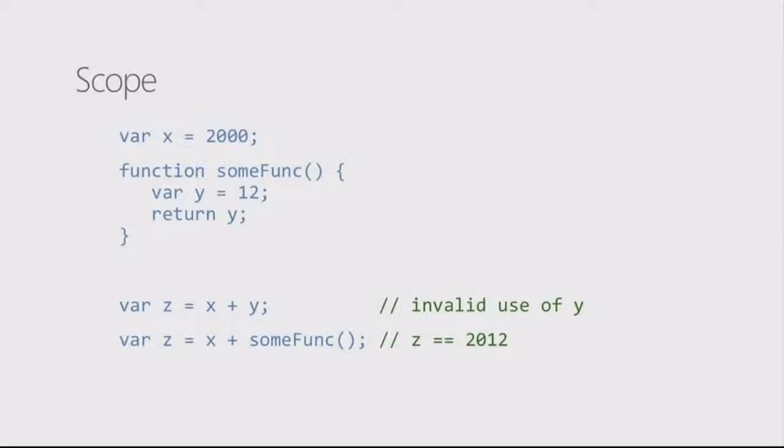However, because we returned y in the function, that's why the next line of code is valid. And x plus some func executing it, which returns the value of y. That's the example there of retrieving that hidden value without actually getting to the specific variable name. So, very simple discussion there on one level of scope.